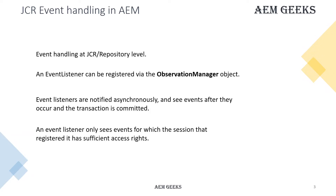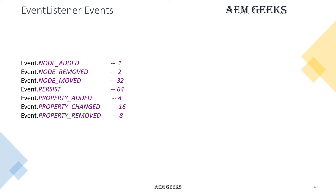This event listener listens for seven standard events: node added, node removed, node moved, persist, property added, property changed, and property removed. You can use the constants or numeric values for these. The event listener will listen for these standard events, though you can use some workarounds to listen for other events as well.